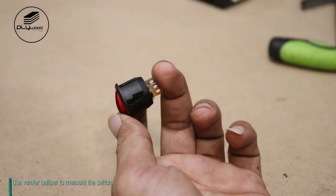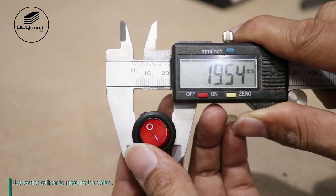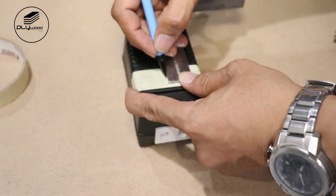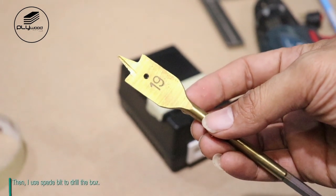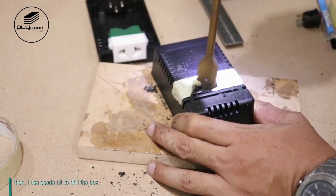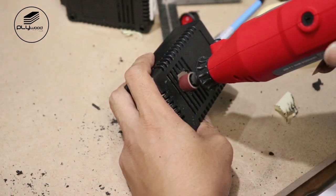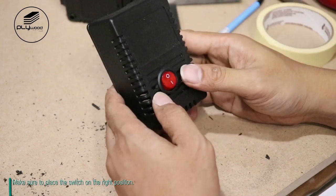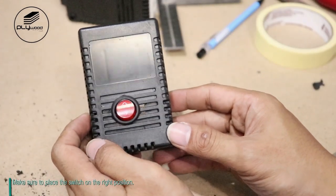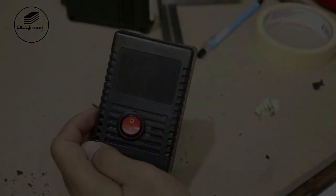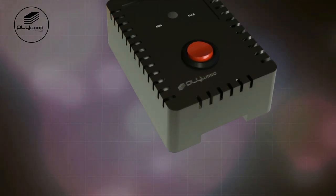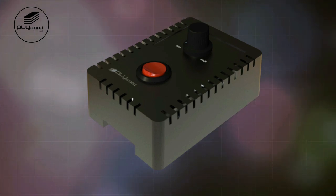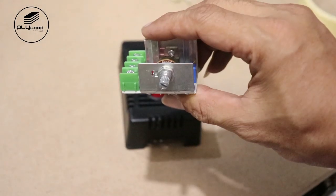Use a vernier caliper to measure the switch. Then I use a spade bit to drill the box. Make sure to place the switch on the right position.